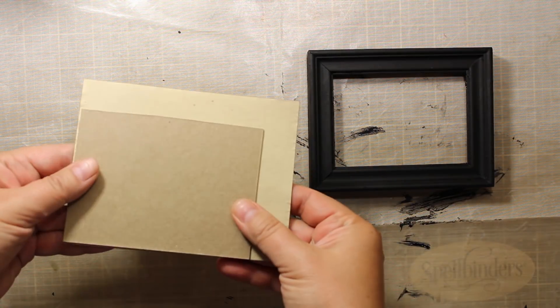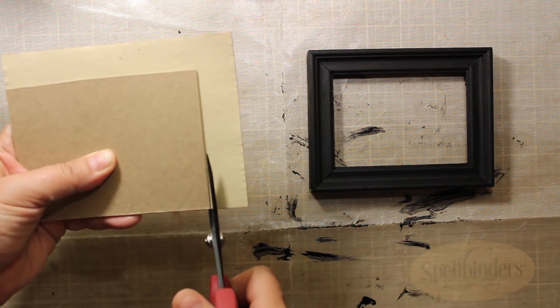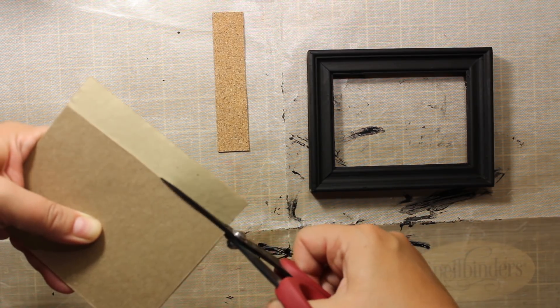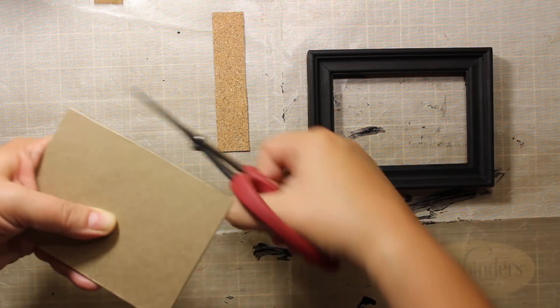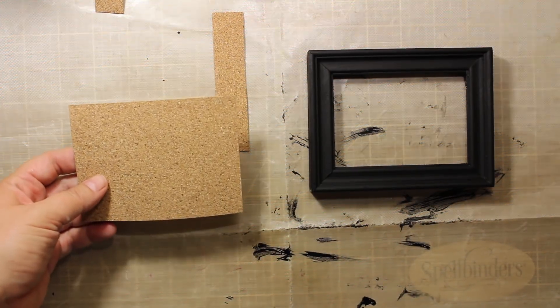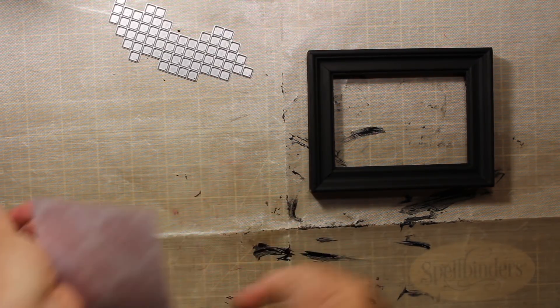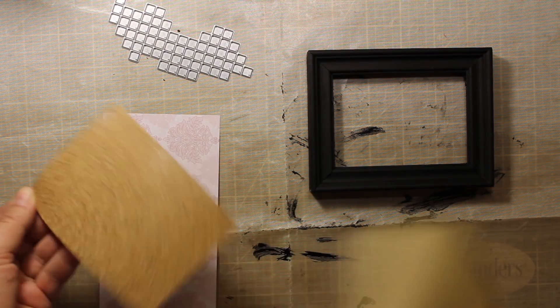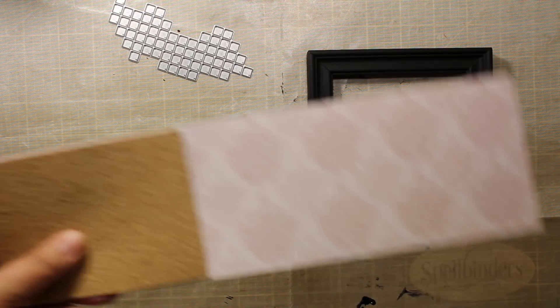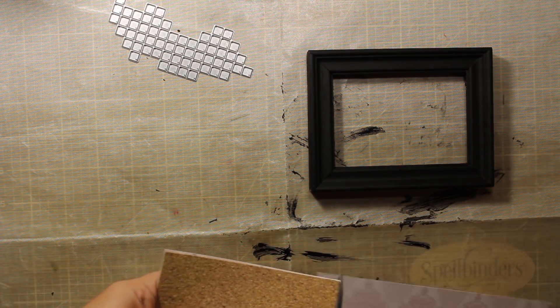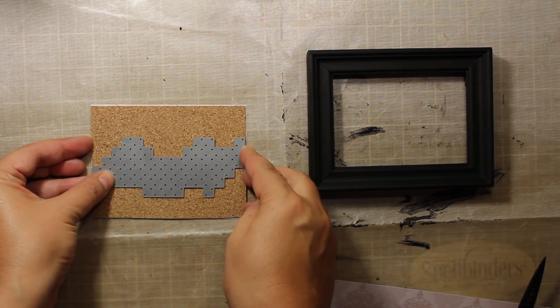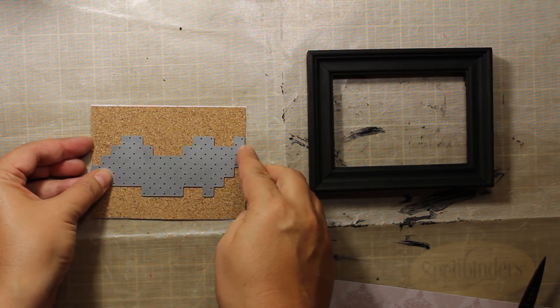I'm going to use this sheet of self-adhesive cork as a background so I'm trimming it down to the size of the backing. Those cork sheets are great for die cutting but they have a peculiarity. They tend to stretch when you are running them through the machine. But that is easy to fix. I'm just going to stick this cork sheet onto a piece of pattern paper and that should prevent it from stretching too much.